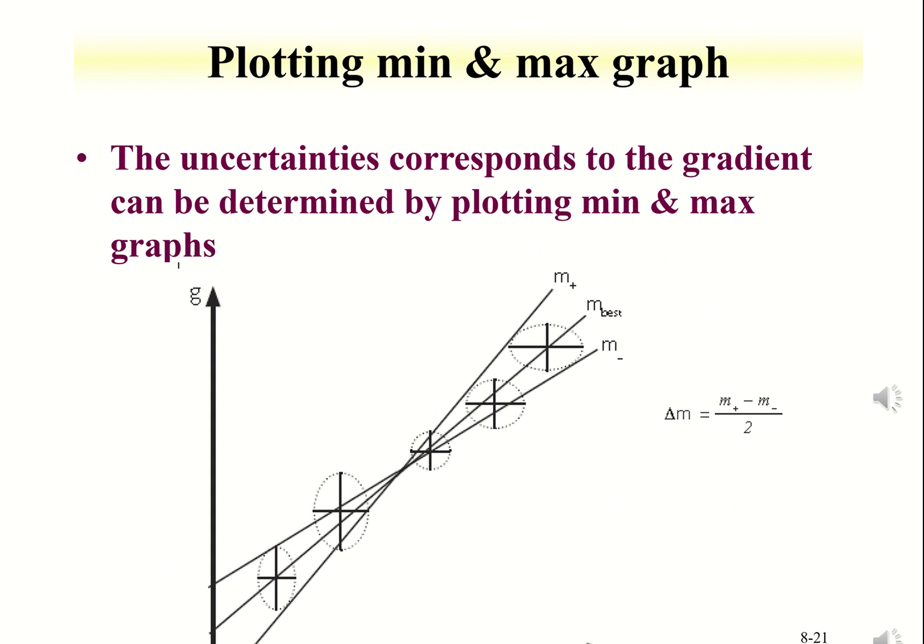Here shows the process of min-max plot. A max and a min line are drawn using the error bars as shown. The formula to obtain the uncertainty of the gradient is given.